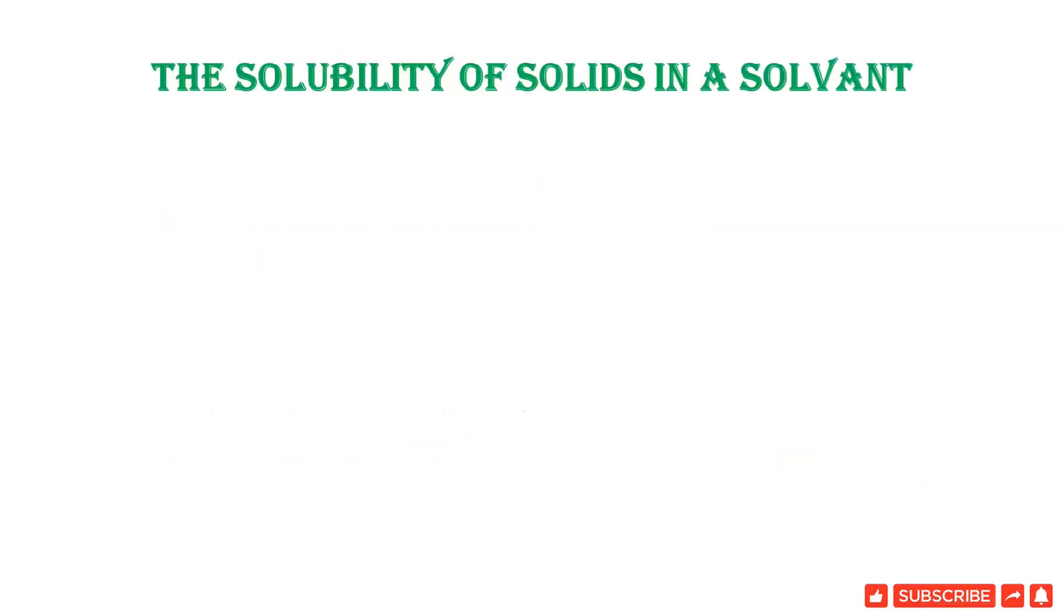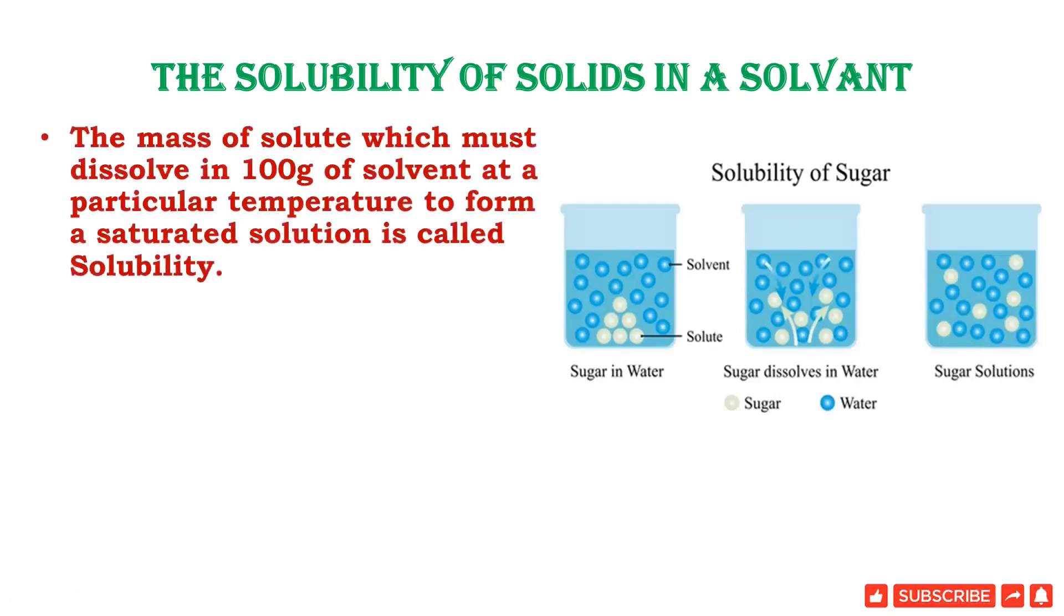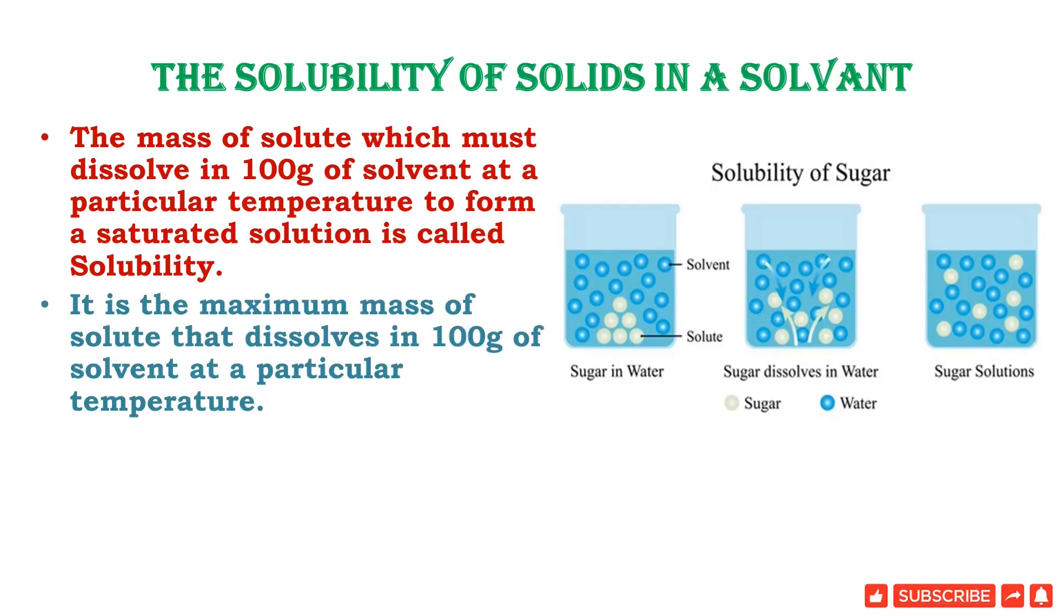Solubility of sugar. You are adding sugar in water. Water is the solvent and sugar is the solute. After diffusion, this gets all over the water and becomes a sugar solution. The mass of solute which must dissolve in 100 grams of solvent at a particular temperature to form a saturated solution is called solubility.